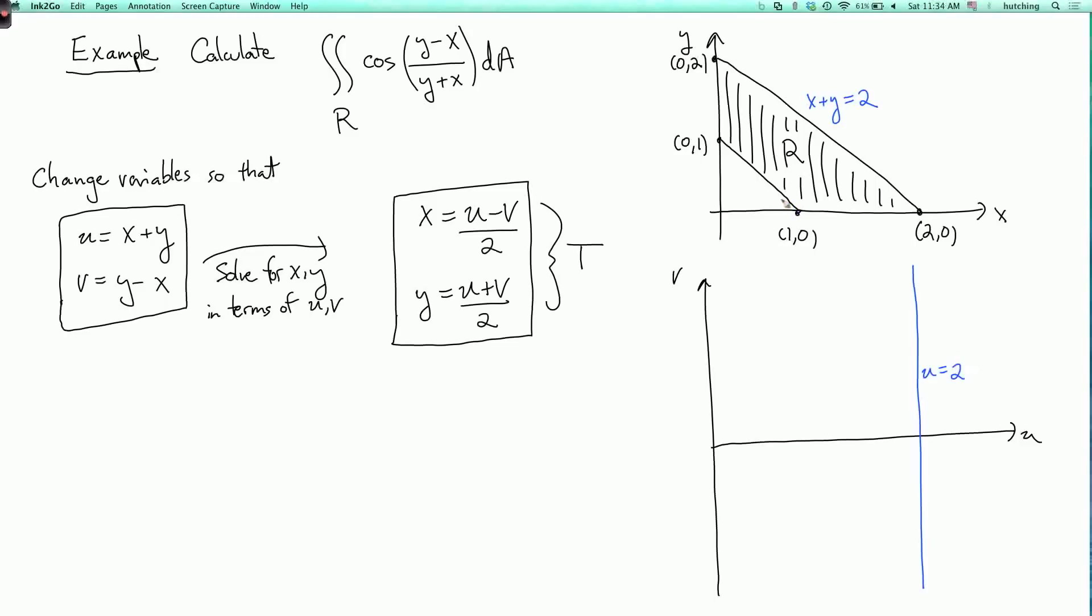And this diagonal boundary edge here, this is the line x plus y equals 1. So in the u, v plane, that corresponds to the line u equals 1.